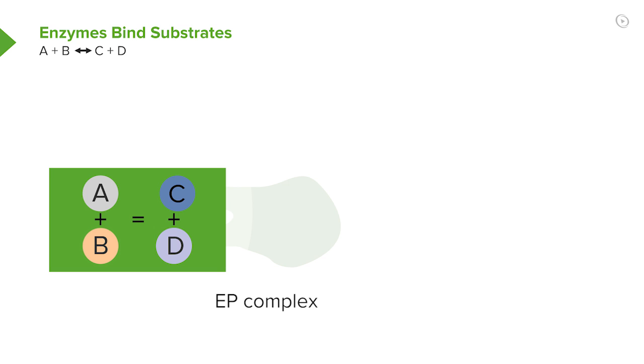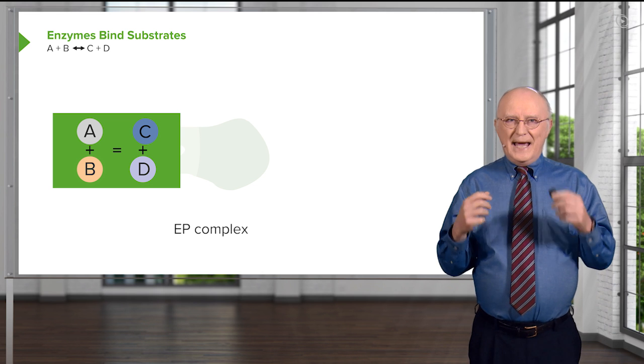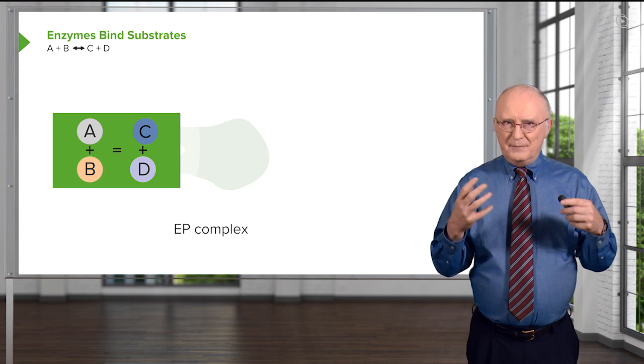A is no longer A and B is no longer B at this point. We have made what we call the EP complex. We've made the products, but we haven't released the products yet. So, A has become C and B has become D.